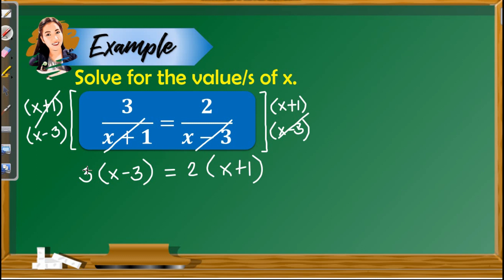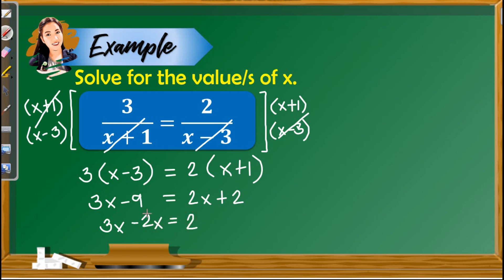We need to distribute the constant 3 to x minus 3, so we have 3x minus 9. On the right side, we distribute 2 to x plus 1, so we have 2x plus 2. Next, we combine like terms, putting all terms with x on the left side and constants on the right. So we have 3x minus 2x. Transposing negative 9 gives positive 9. So 3x minus 2x gives us x, and 2 plus 9 gives us 11. So here's the answer: x is equal to 11.